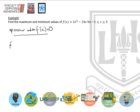So f dash x here is 6x squared minus 24 equals 0. So we can just rearrange, 6x squared equals 24, which means x squared is 4, and x is plus or minus 2.